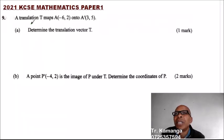Question number 9: Translation T maps A(-6, 2) onto A'(3, 5). Determine the translation vector T. Part b: A point P'(-4, 2) is the image of P under translation T. Determine the coordinates of P.